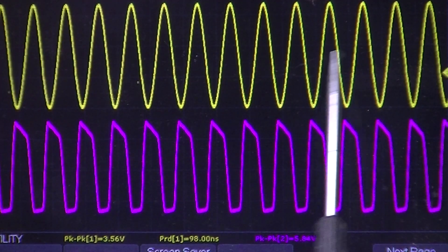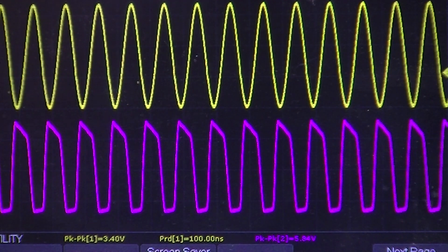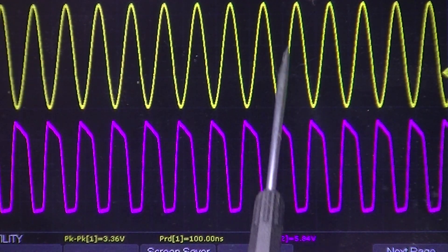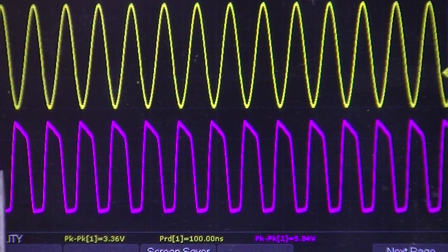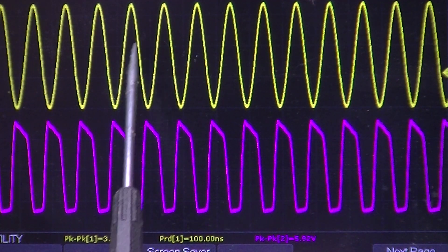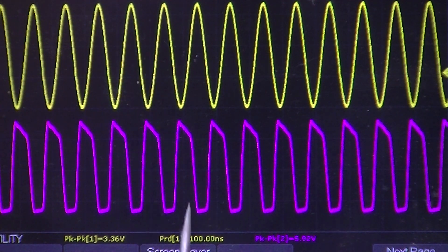You can see a nice sine wave here which is the output from the sine wave oscillator. You can see here it's chopped off top and bottom. Now this is 3.4 volts peak to peak and this is 6 volts peak to peak.